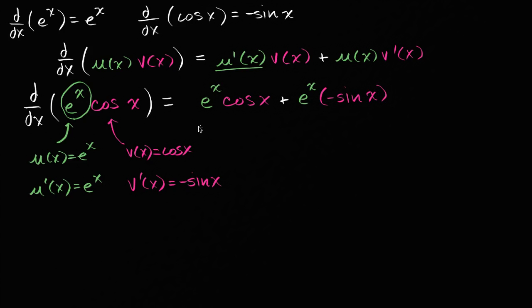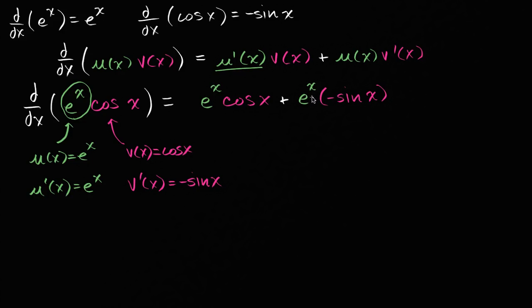It might be a little bit confusing because e to the x is its own derivative. But you can view this as: this was the derivative of e to the x, which happens to be e to the x — that's what's exciting about that function. And then this is just e to the x without taking its derivative; they're of course the same thing.